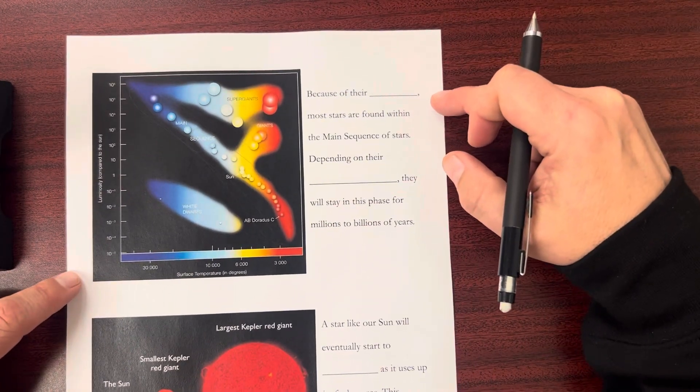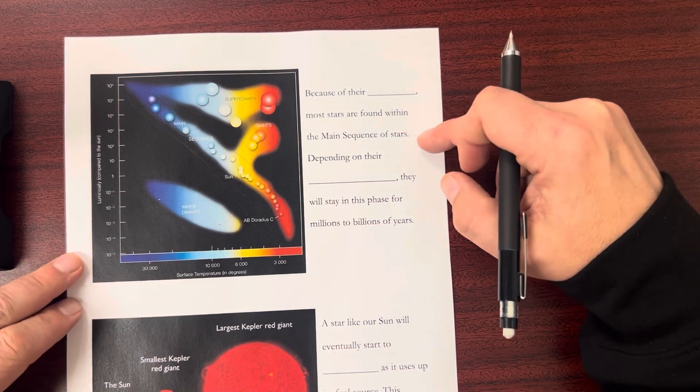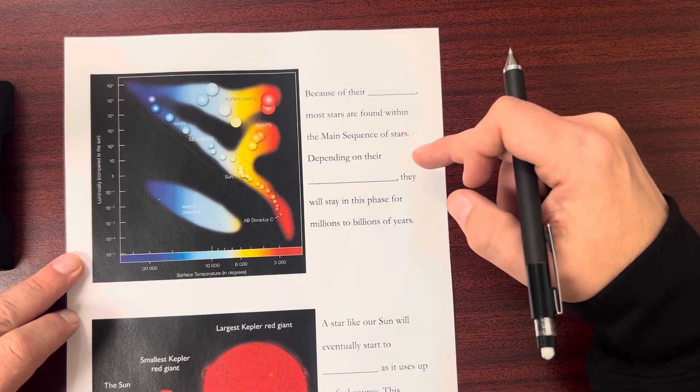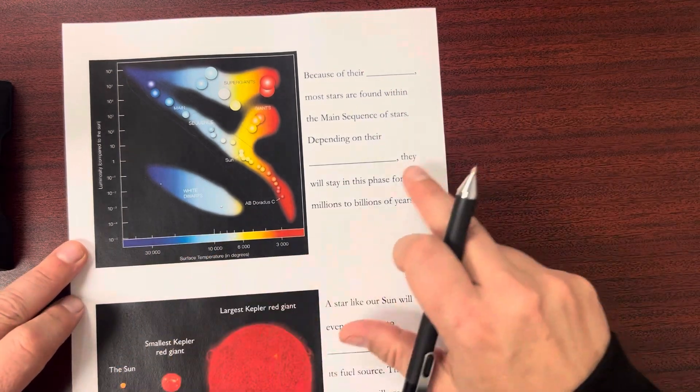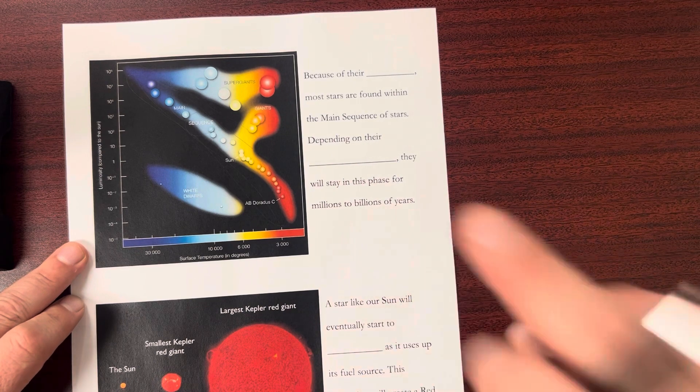Because of their size, most stars are found within the main sequence of stars. Depending on their temperature, they will stay in this phase for millions to billions of years.